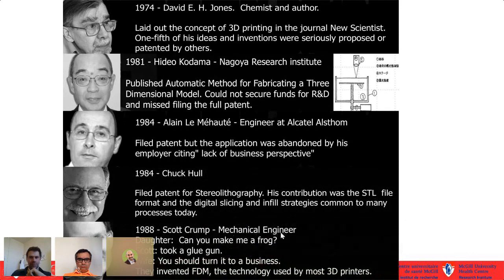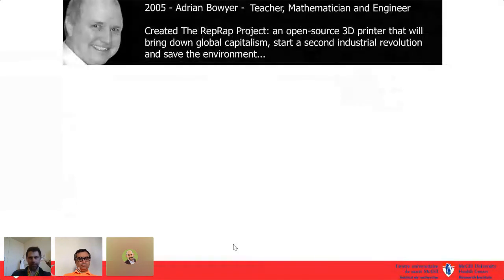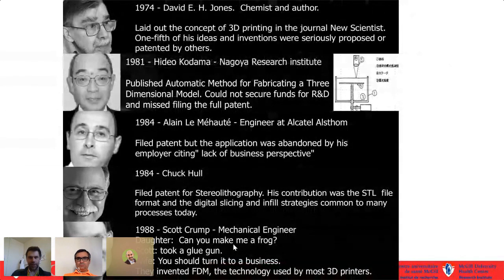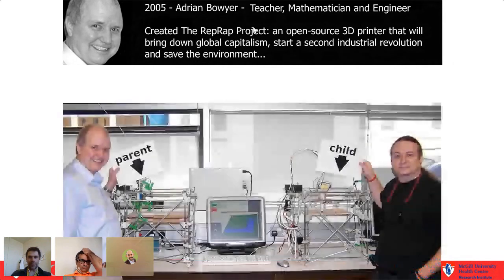In 1988, Scott Crump, a mechanical engineer, came up with the idea for fused deposition modeling using a hot glue gun — the type of 3D printer most of us have on our desks. In 2005 at the University of Bath in England, the RepRap movement started, with the idea of open-source 3D printers to create a manufacturing revolution where everyone could make their own things. Their claim to fame was a printer that could print all the parts for its offspring printer.